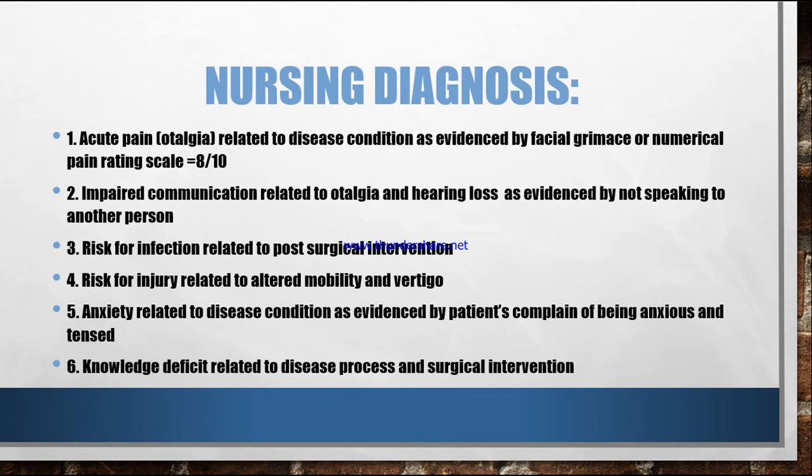These are some of the nursing diagnoses which are applicable for ENT disease conditions. Number one is acute pain or otalgia — otalgia is pain in the ear. Acute pain related to disease condition as evidenced by facial grimace or numerical pain rating scale equal to 8 out of 10. Some disease conditions cause patients to have pain in the ears, which is called otalgia, and this nursing diagnosis is applicable for that symptom.